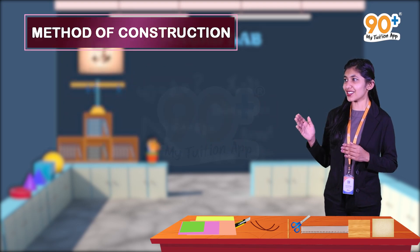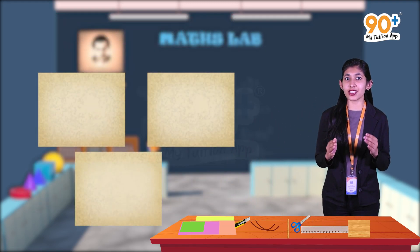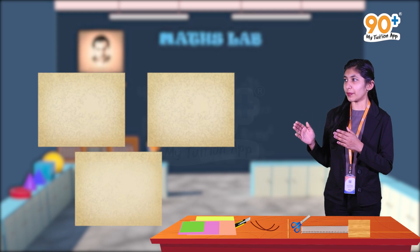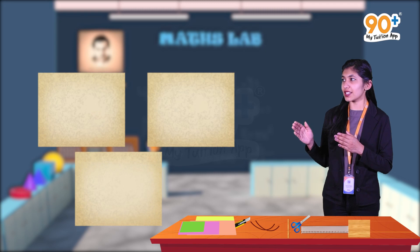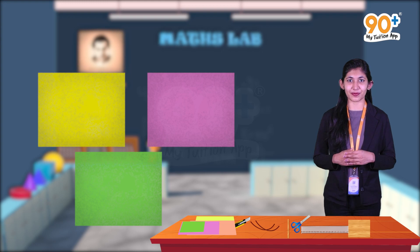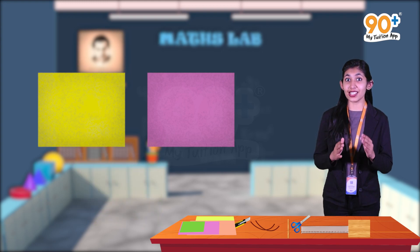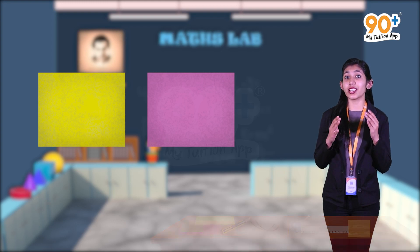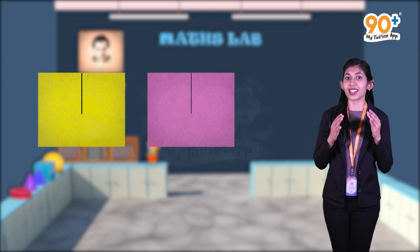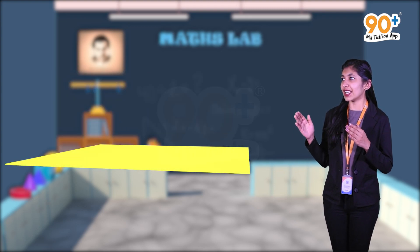Let's move on to the method of construction. First, take a piece of plywood and cut three squares of the same size. Then take colored papers of three different colors and paste them on both sides of these squares. For each of these squares, make cuts from the middle of one side to the center, then fix two square sheets so that they intersect orthogonally in the middle of each other.